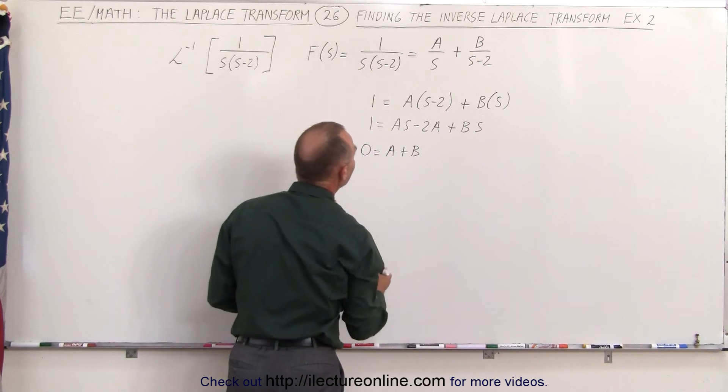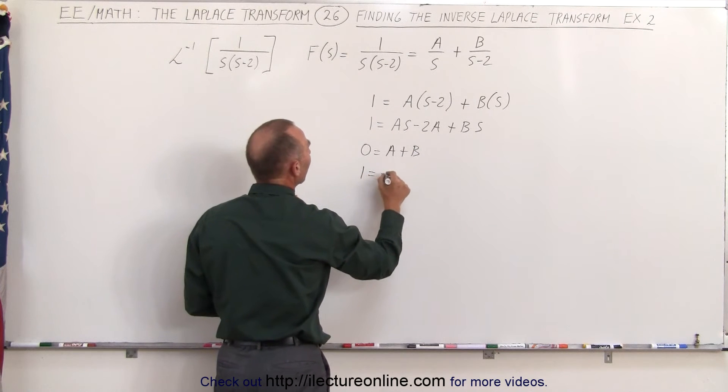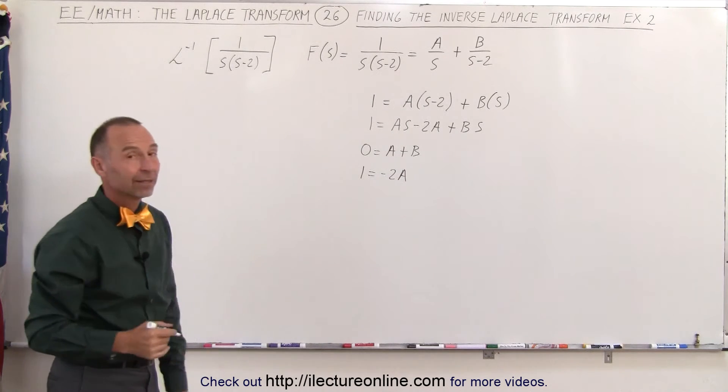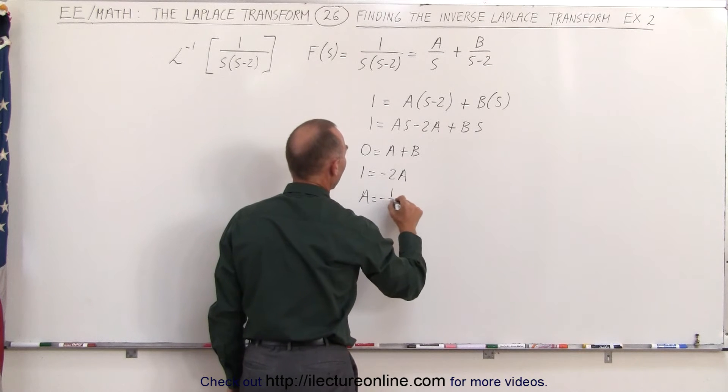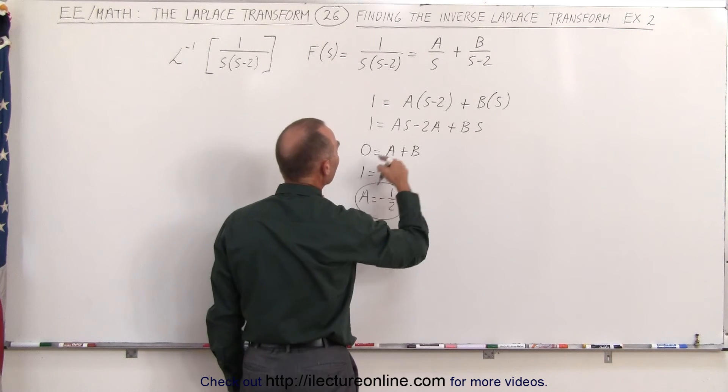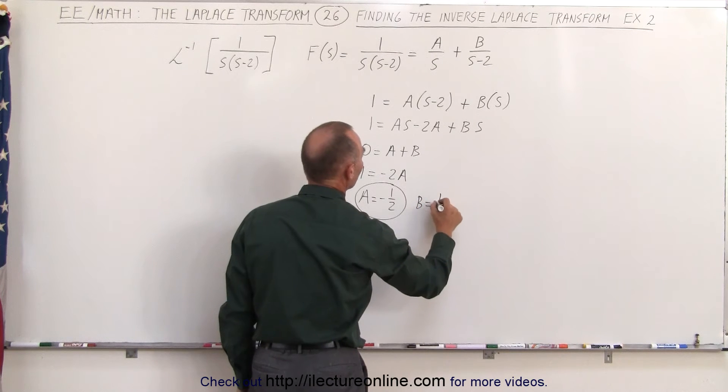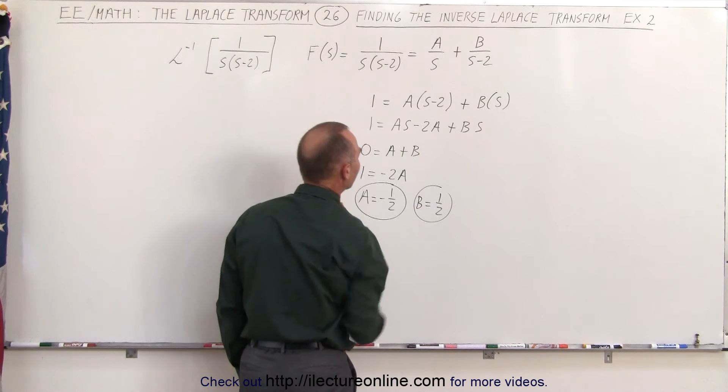And then I have a 1 on the left side and a minus 2a, which means 1 equals minus 2a because that is the constant term. That makes it easy. That tells us that a is equal to minus 1 half, and since a plus b is equal to 0, that means b must be equal to plus 1 half because minus 1 half plus 1 half together gives us 0.